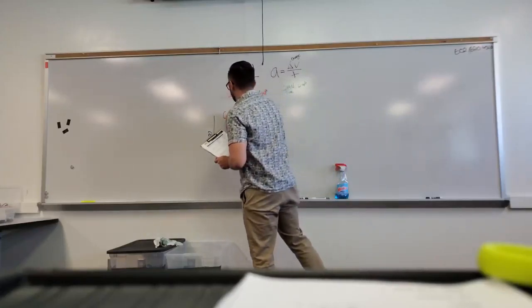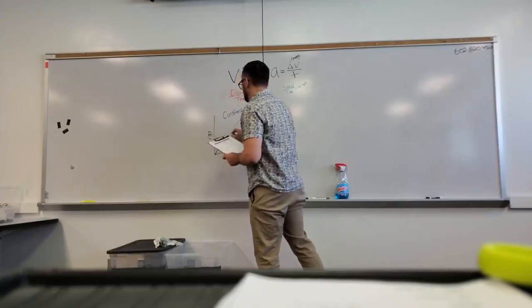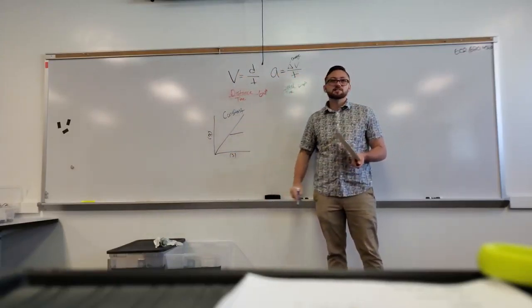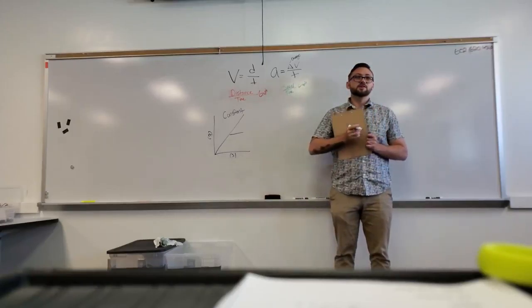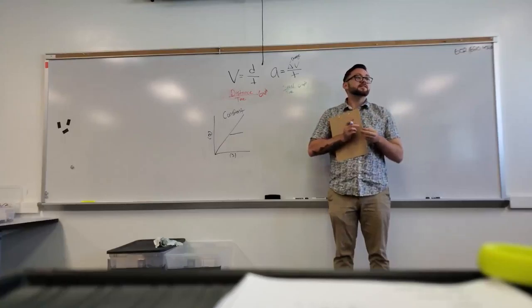It's just going to be constantly moving on a graph. So I'll even write constant. Could it also be just a flat line? Is that constant? Yeah, it's constantly zero. So it could be straight up, straight down, flat. It's basically if it has the same slope for a period of time, that's constant.